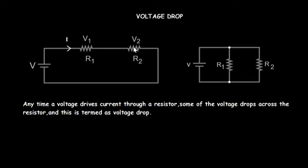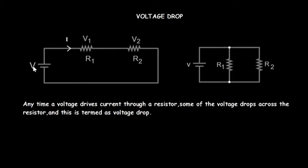One thing you should know is that for resistors in a series connection, when you add the voltage drop across each of the resistors it should be equal to the total voltage from the source. So in this case, when I add voltage drop V1 and voltage drop V2, it should be equal to the total voltage V from the source.